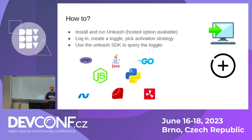So how do you start with Unleash? You can install and run the binary itself, download it, or use a hosted option. Once you run it, you log into the system, create a toggle, and pick an activation strategy. You also need to integrate with your code: you can use one of the available SDKs that Unleash provides in different languages, and then make an API call to the Unleash system asking whether a feature is enabled or not.